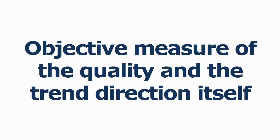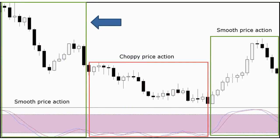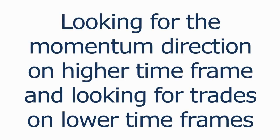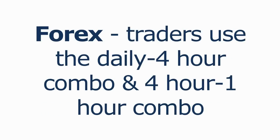One component of a stochastics trading strategy is an objective measure of the quality of the price trend and the trend direction itself. If price is trending to the downside, your trading plan may call for continued short positions instead of counter-trend trades. All trends are not created equal, and the stochastics will help you determine the quality of the momentum of the trend. The first green area shows the stochastics pointing to the downside — you'd only be looking for a sell signal in that market condition. Look at the separation of the slow and fast lines of the indicator; that indicates a nice, smooth trend in play. You may want to consider using a multiple-timeframe approach: using a 60-minute trend for trades on the 15-minute time frame, or the daily chart for momentum trend in Forex, with some traders using the daily/4-hour combo and the 4-hour/1-hour combo.